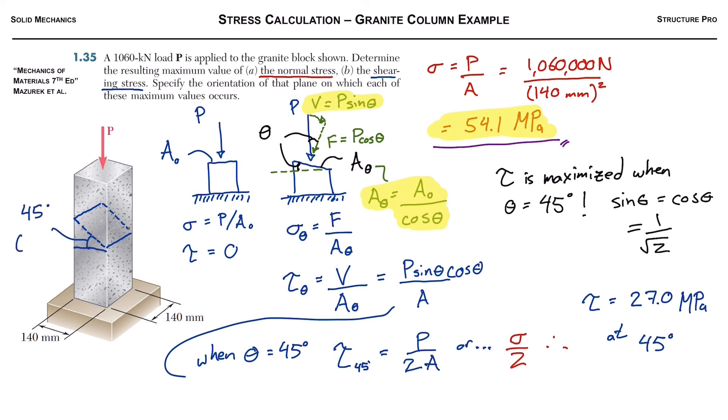So we can draw our angle of inclination right here on the granite block here for part B, because it's also asking for the orientation. And then we just highlight it, underline it in purple. Done.